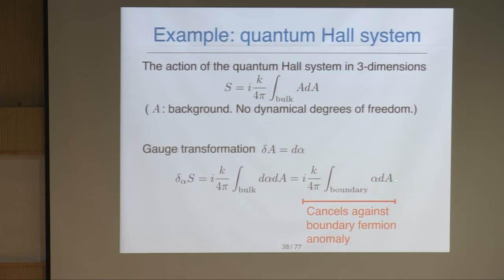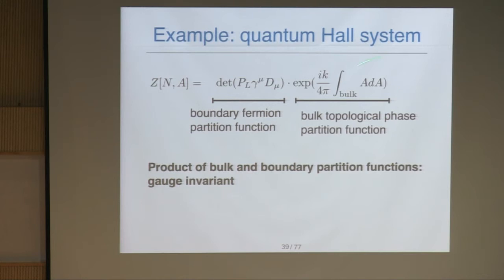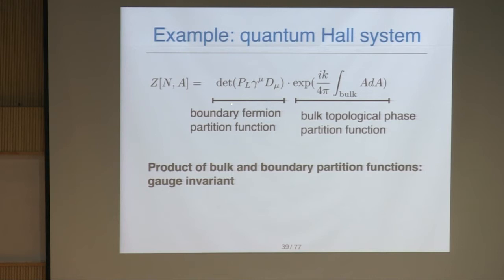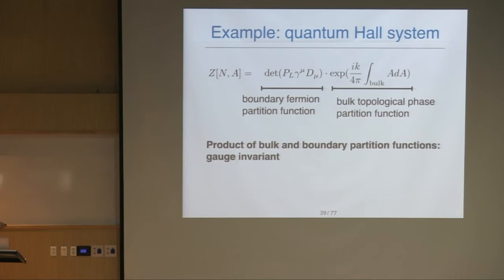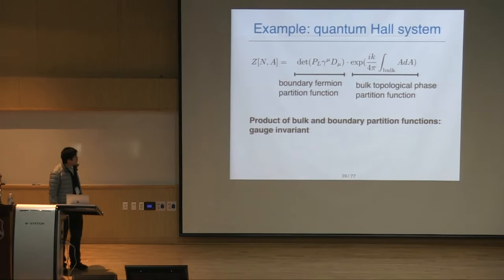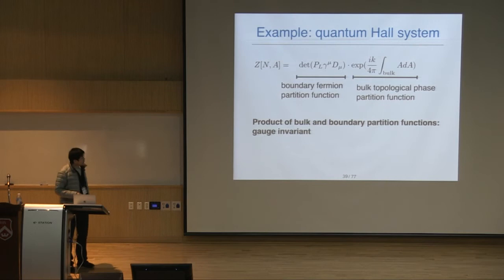This boundary term precisely cancels against the anomaly of the boundary fermion. The total partition function is the product of two factors: the partition function of the boundary fermion, and the action of the bulk topological phase. Each of these terms is not gauge invariant, but their product is gauge invariant. In this way, by extending the manifold to one higher dimension, we can fix the partition function in a gauge invariant way.